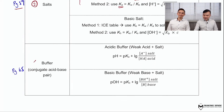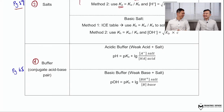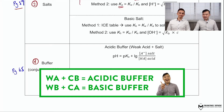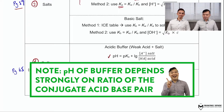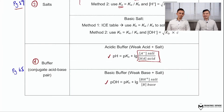The last scenario — scenario number four — is where we get a buffer. A buffer must have a conjugate acid-base pair. Depending on whether it's an acidic or a basic buffer, the formulas to use are shown here. You'll notice that the two formulas all depend on the ratio between the two major components of a buffer: its weak acid or base and its own conjugate.